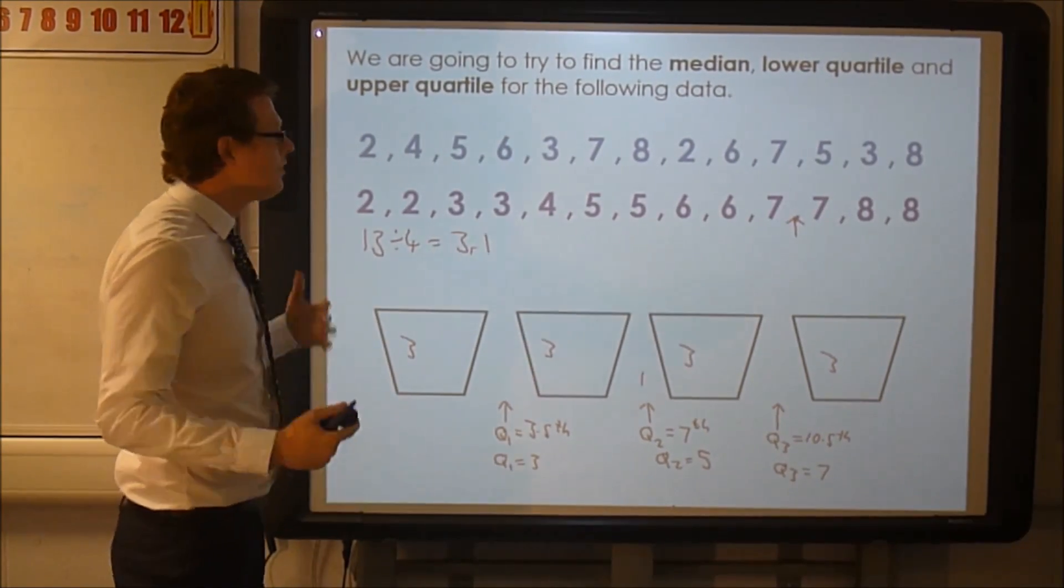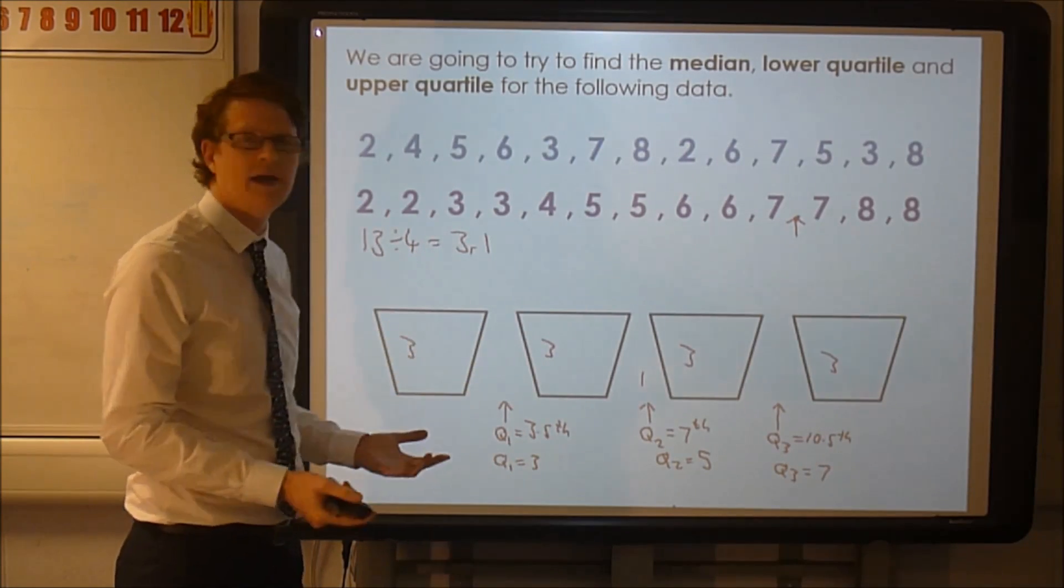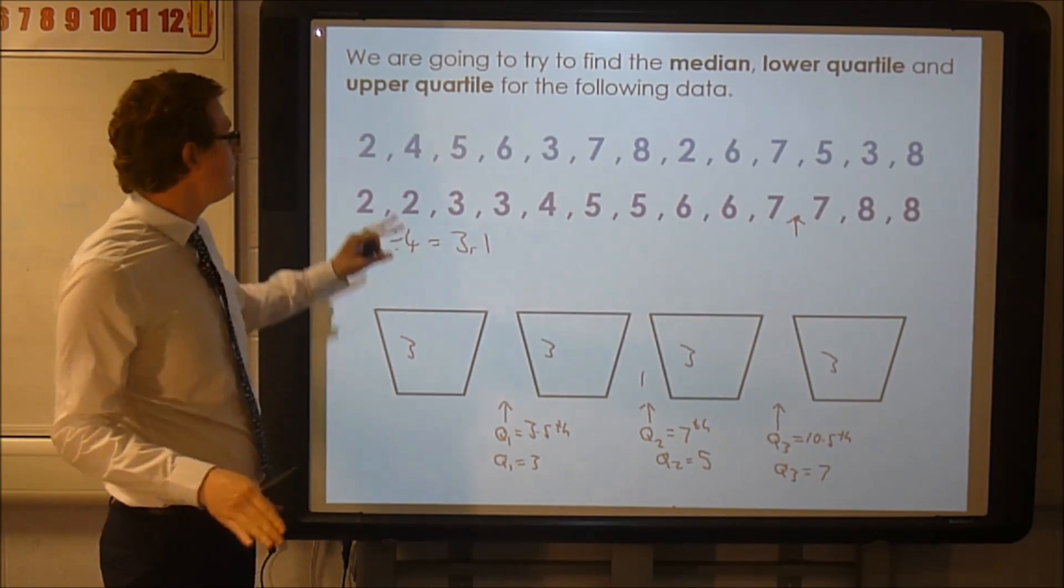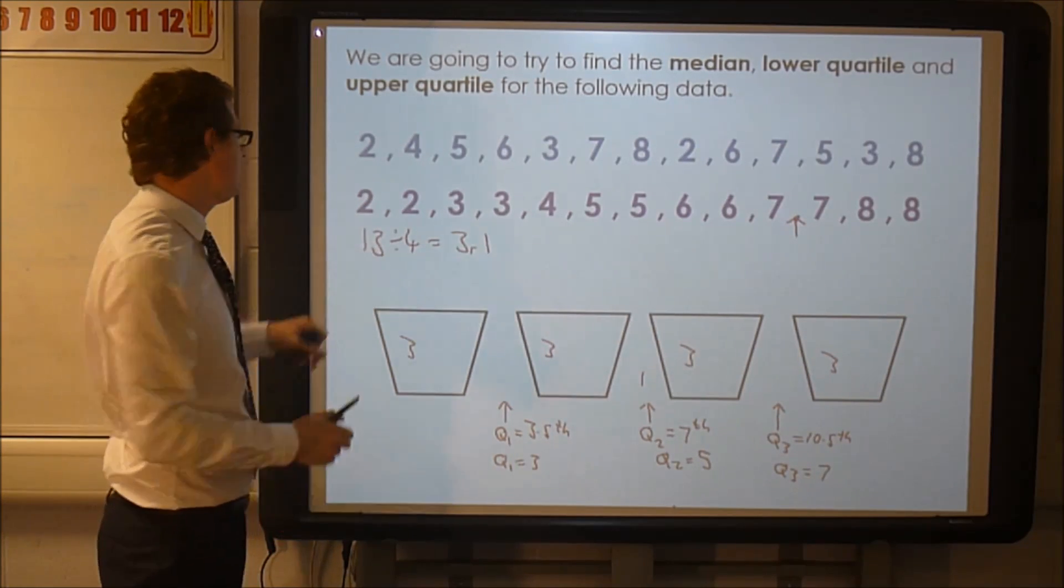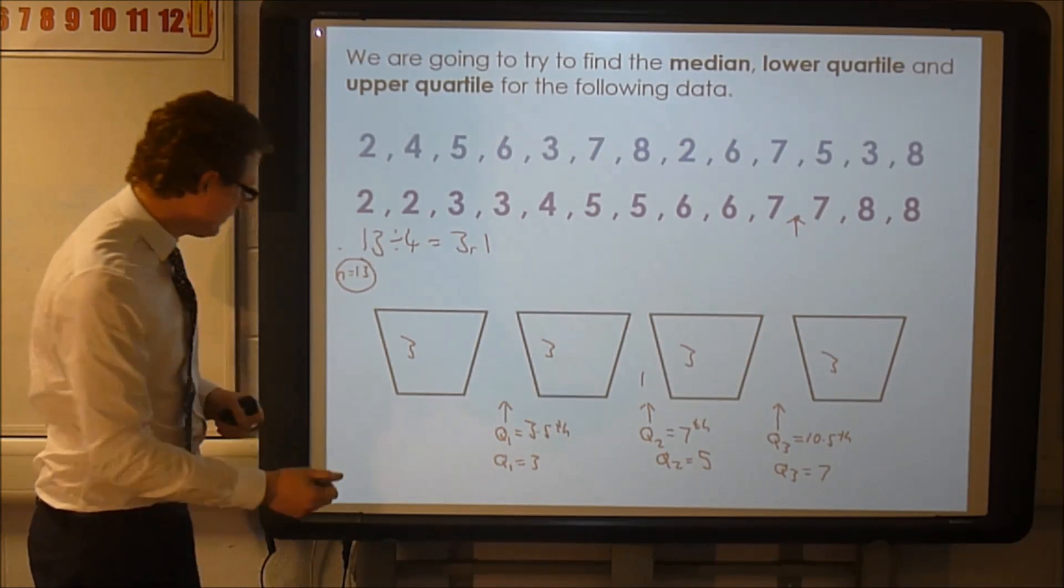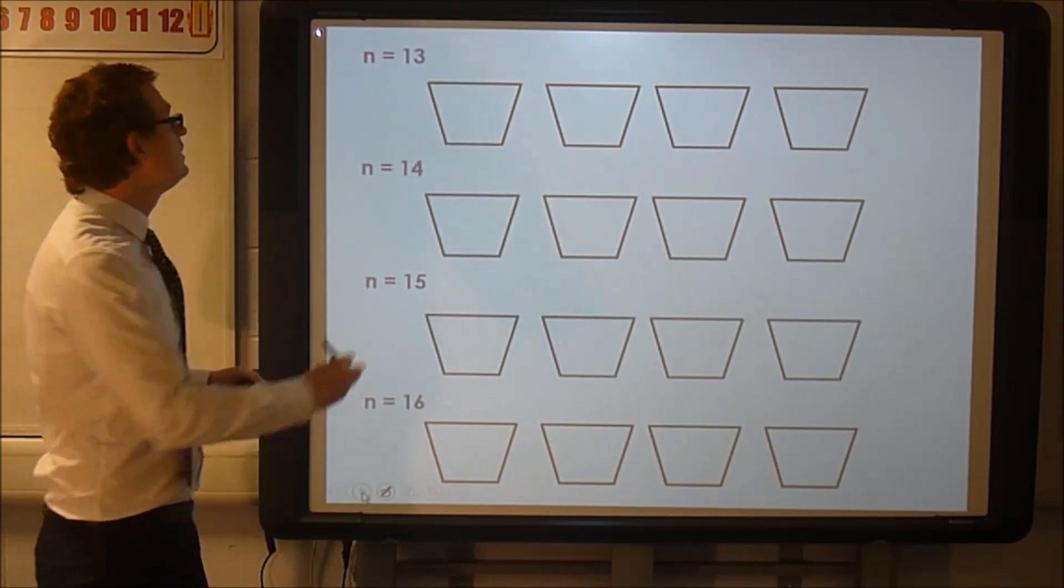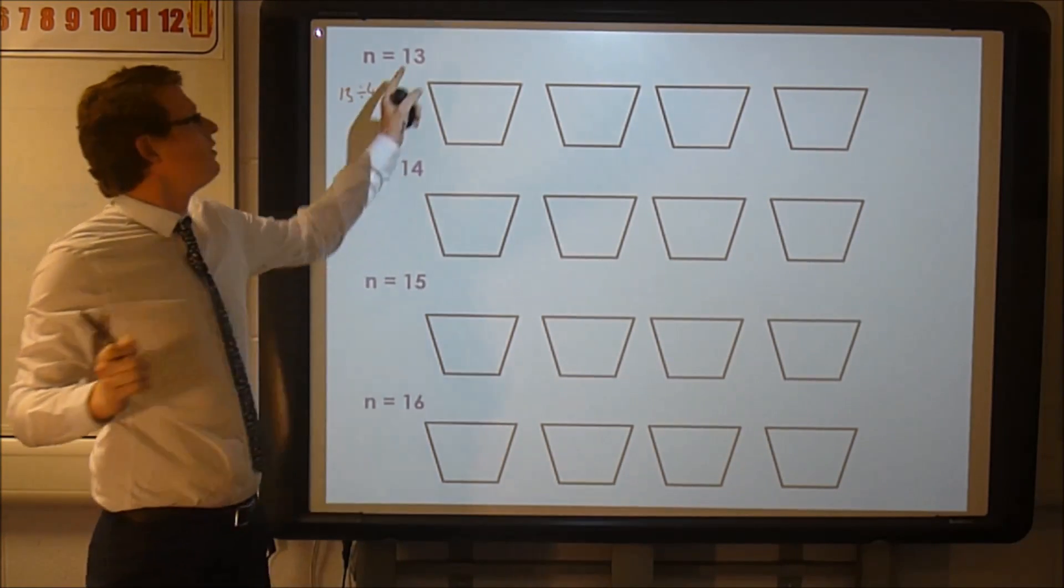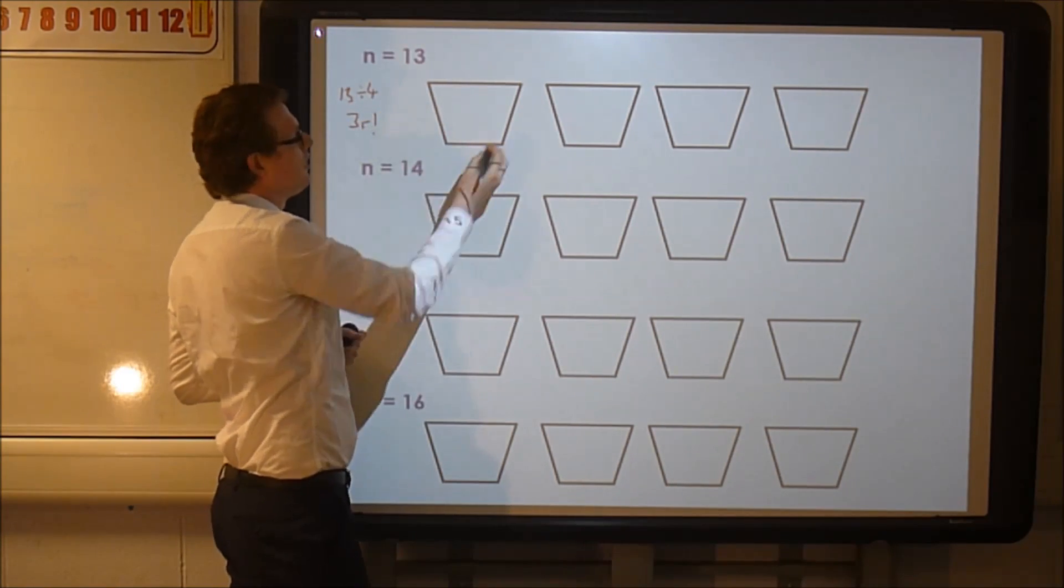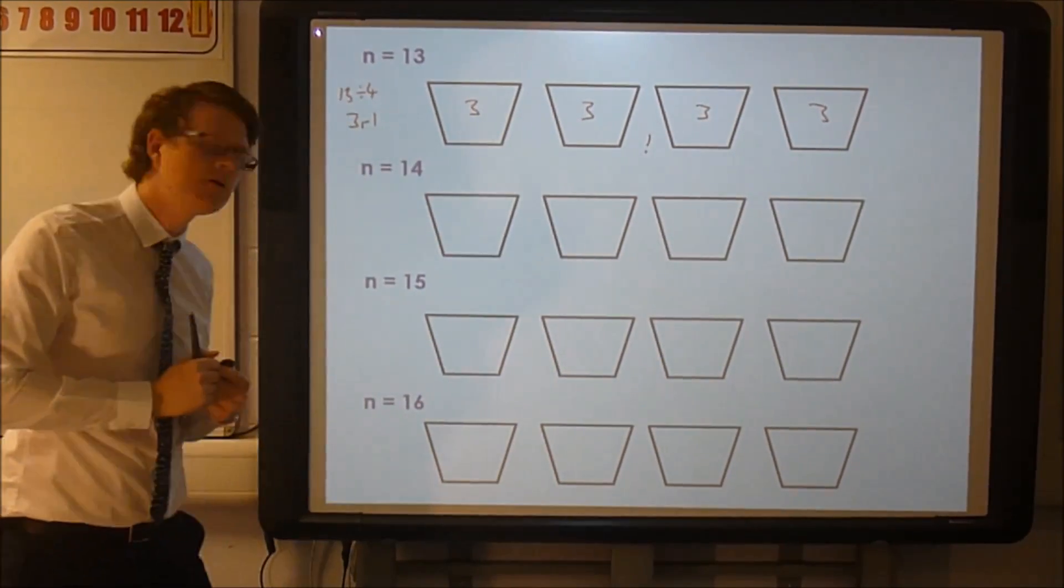Now I know what you're thinking. What about the remainders? They might be a bit different. Well this has got remainder one. What if it's remainder two or remainder three? What if there's no remainder? Well on your note sheet you can see that I've done a situation where n is 13, I might say, n being the number of bits of data. Well let's have a look at some other situations. So n is 13, we did 13 divided by four. Let's share 13 into these four pots. And we said well we're going to get three in each one, remainder one. So three in each one.